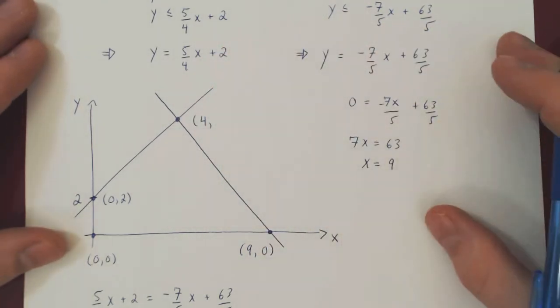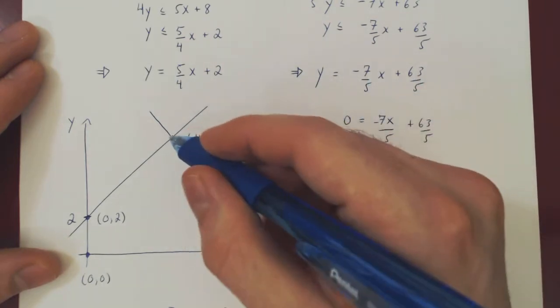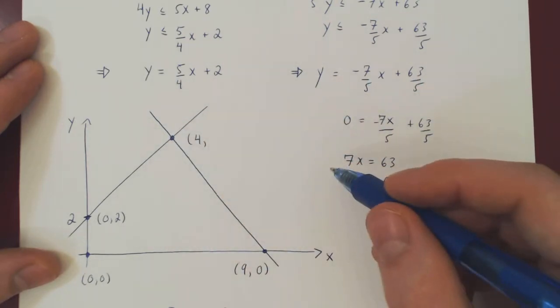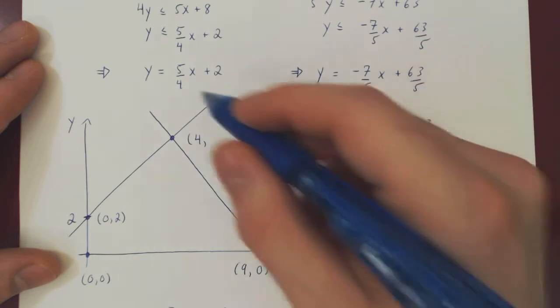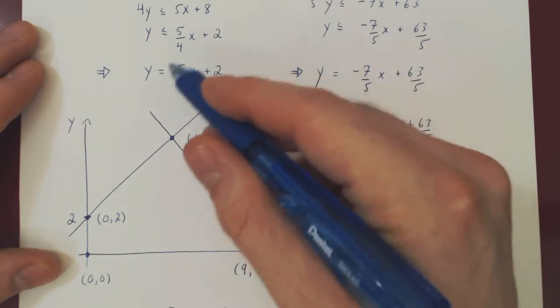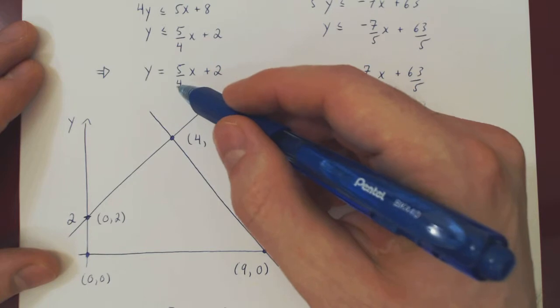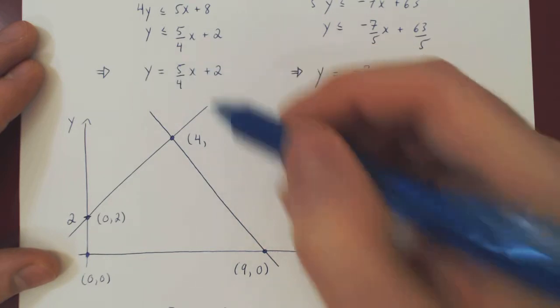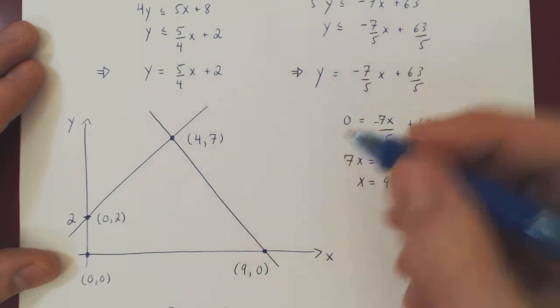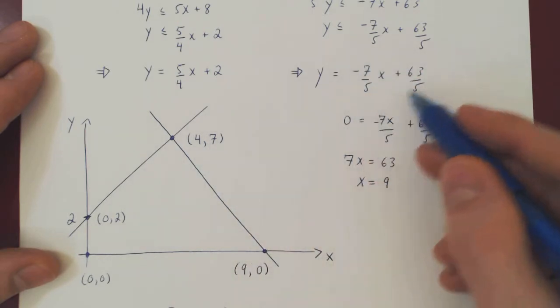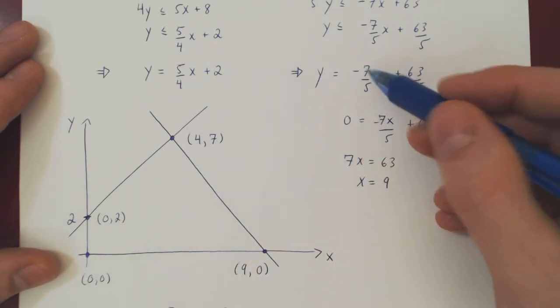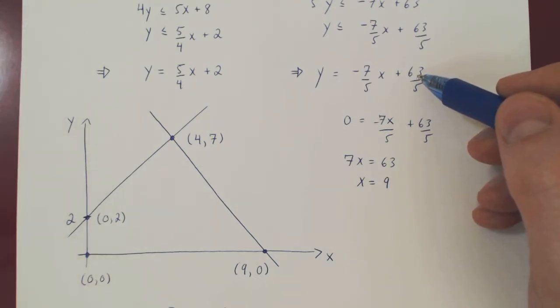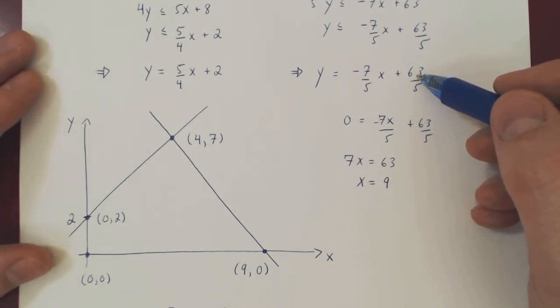Let us now find the y value. We can use either line as this is the point of intersection of both lines, so we could plug in 4 in here or 4 in here. Well clearly this is a simpler equation. 5 over 4 times 4 is 5 plus 2 is 7. You can verify if you plug in 4 in here: 4 times negative 7 is negative 28, negative 28 plus 63 is 35, and 35 over 5 is 7.